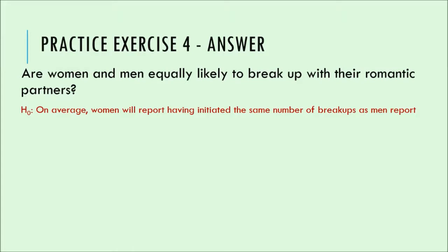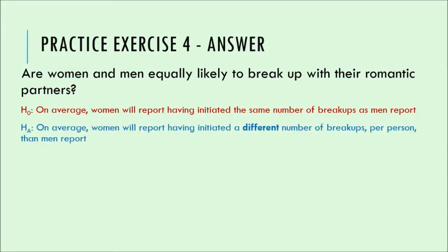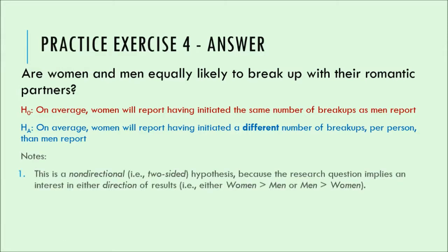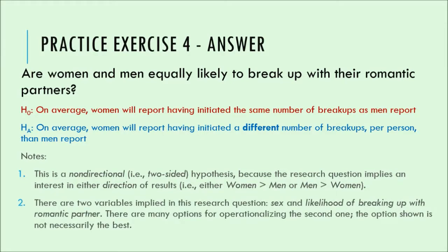I decided: null hypothesis — on average, women will report having initiated the same number of breakups as men report. Alternative hypothesis — on average, they will report having initiated a different number. The question doesn't make clear which direction the researchers think things are going — they're just interested if there's a difference — so this is a non-directional hypothesis. We're interested in whether women have more initiated breakups than men or vice versa. There are a lot of ways to operationalize likelihood of breaking up; I chose the number of breakups each person reports having initiated.